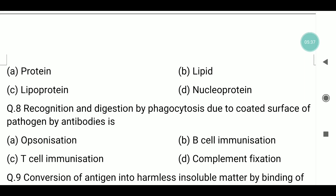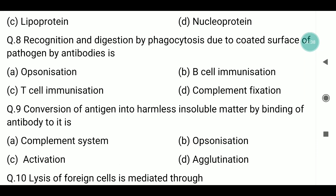Question number eight: recognition and digestion by phagocytosis due to coated surface of pathogen by antibodies — this process is known as what? Antibody coats the microorganism (pathogen) so it can be recognized and engulfed. The answer relates to B-cell immunization; T-cell and B-lymphocyte antibodies can also destroy cancer cells.